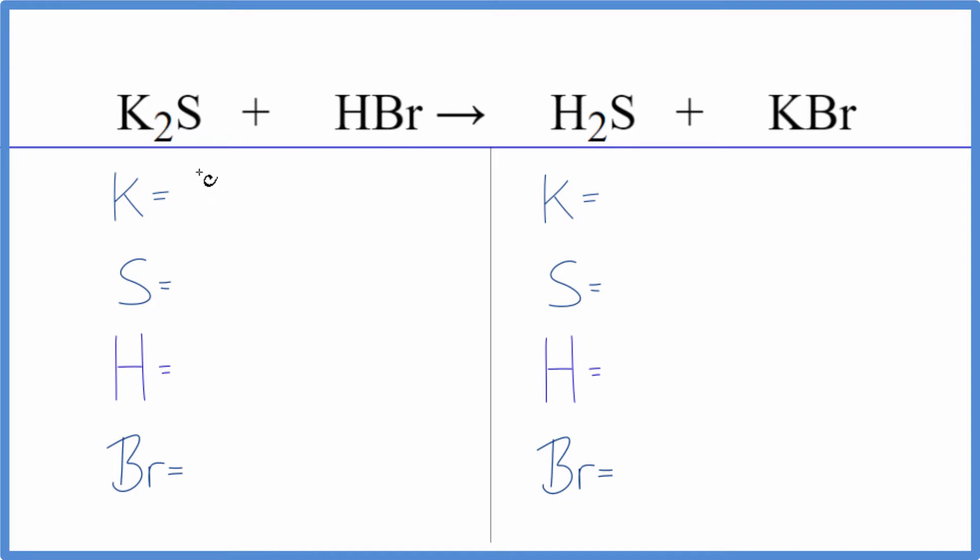Let's count the atoms up and balance the equation. Two potassium atoms, one sulfur, then one hydrogen, and one bromine. Product side, we have one potassium, one sulfur, two hydrogens, and then one bromine.